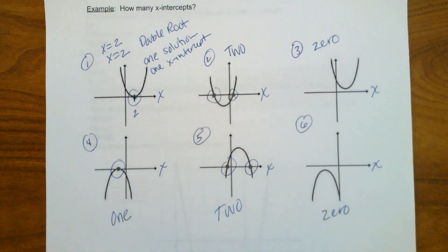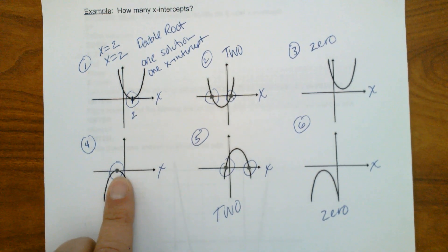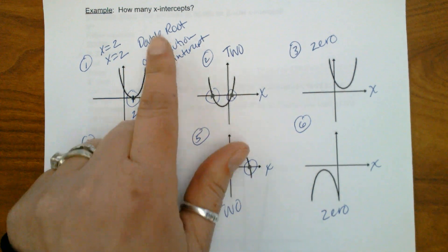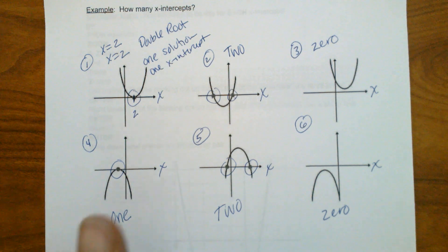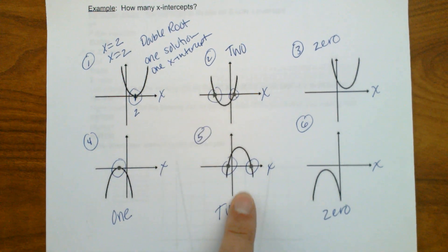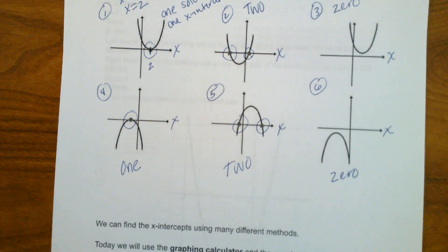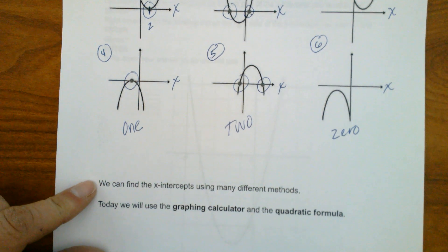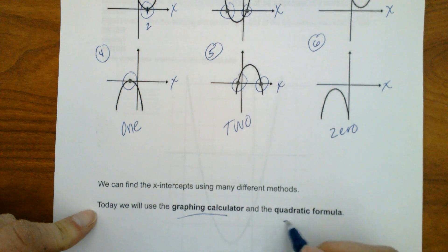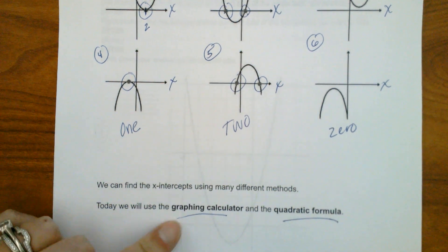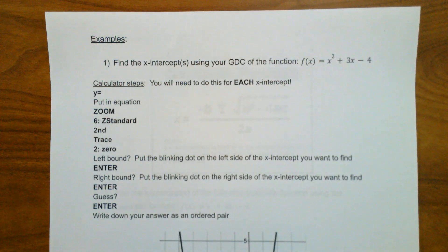So when we see it sitting on or touching the x-axis, there is a double root — we would get the same number, just one solution. We can also have two intercepts or zero. Those are the graph examples. We can find our x-intercepts using many different methods. Today we're going to be using the graphing calculator and the quadratic formula. Graphing calculator is first, so take out those graphing calculators.